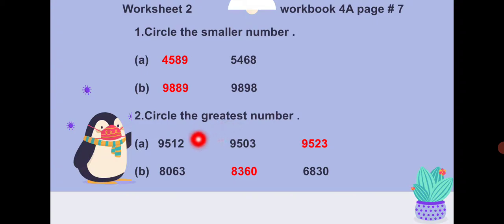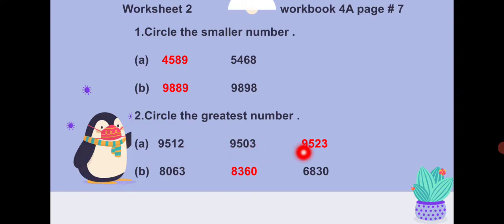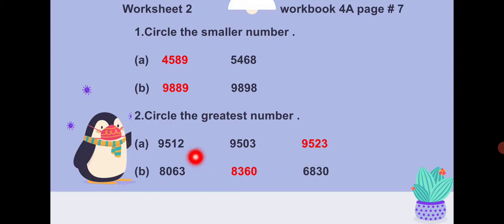For finding the greatest number with three values — Part A: nine thousand five hundred and twelve, nine thousand five hundred and three, nine thousand five hundred and twenty-three. Nine, nine, nine are equal; five, five, five are equal at hundreds. Looking at tens: one, zero, and two — two is the greatest, so nine thousand five hundred and twenty-three is the greatest number.